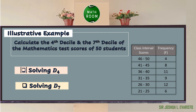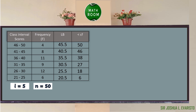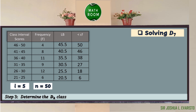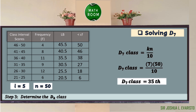After solving for the 4th decile, let us solve the 7th decile, D sub 7. Since we already identified the lower boundaries and less than cumulative frequencies, we proceed to step 3: determine the D sub k class. D sub 7 class equals 7 times 50 over 10. Since n equals 50 and k equals 7, we compute 7 times 50 equals 350, divided by 10, giving us 35. Since 35 is between 27 and 38, we choose the higher value, 38. Hence, the D sub 7 class is found in the fourth class.